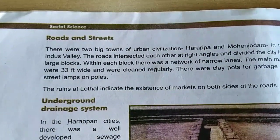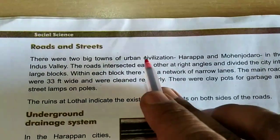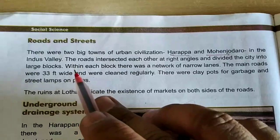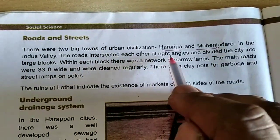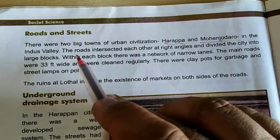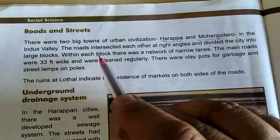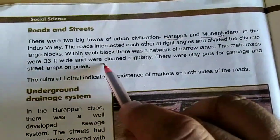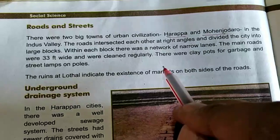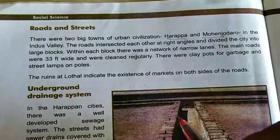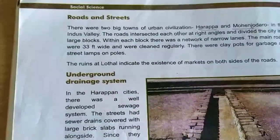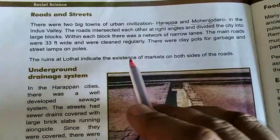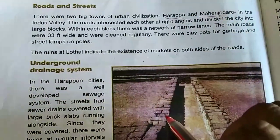Roads and Streets. There were two big towns of urban civilization — Harappa and Mohenjo-Daro — in the Indus Valley. The roads intersected each other at right angles and divided the city into large blocks. Within each block there was a network of narrow lanes. The main roads were 33 feet wide and were cleaned regularly. There were clay pots for garbage and street lamps on poles. The ruins at Lothal indicate the existence of markets on both sides of the roads.